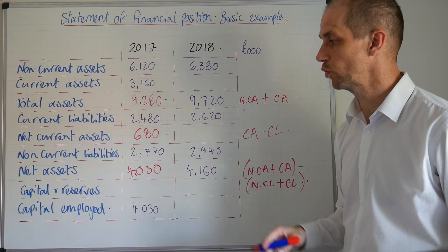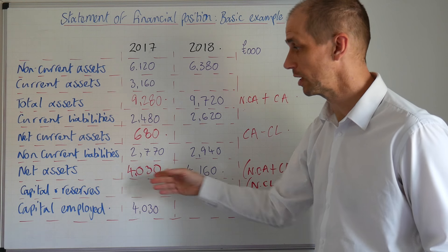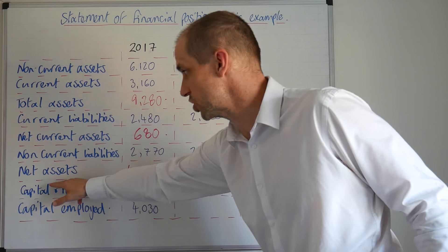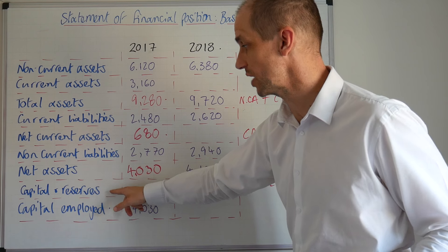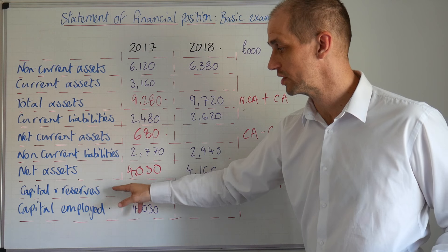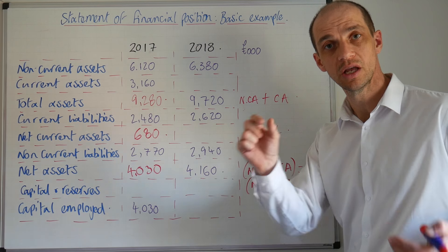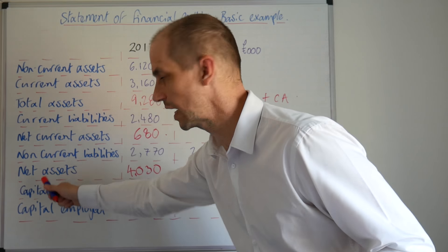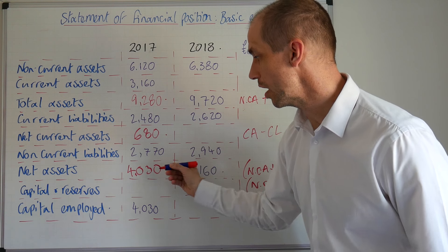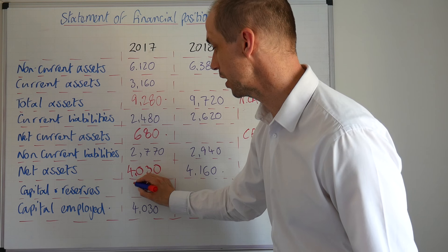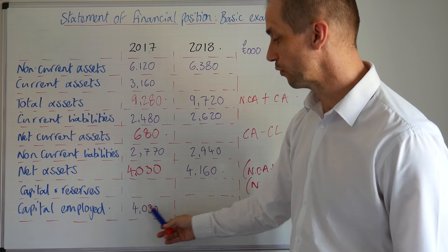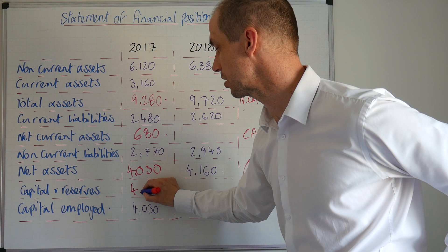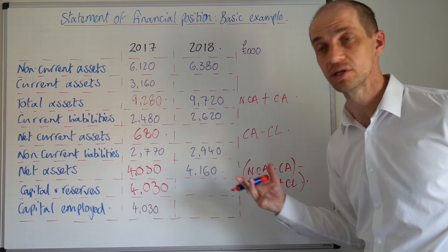This is the 'financed by' part of the balance sheet. I've broken this down into one simple area: capital and reserves. This might be share capital, otherwise known as equity. It could be broken into two areas showing how much is reserves and how much is share capital. Given that there is 4,030 — or 4.03 million pounds — employed in this business, the figure is, of course, 4,030 once again.